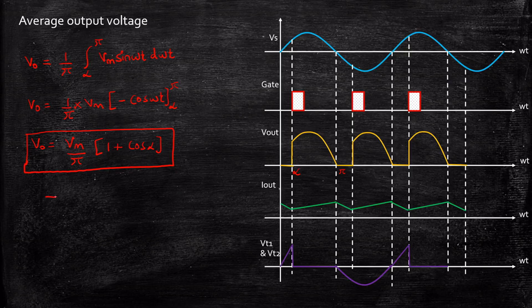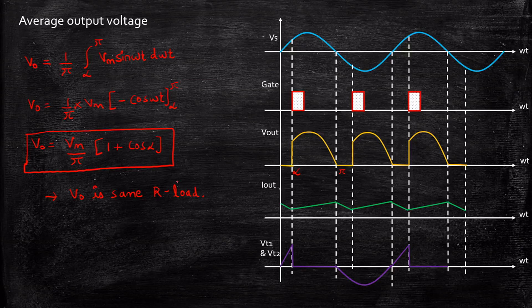One short observation: when we have a freewheeling diode with an RL load, the average output voltage expression is the same as with an R load for a fully controlled rectifier. This was derived in the previous cases, so note that you get the same voltage expression when you have RL load plus freewheeling diode.